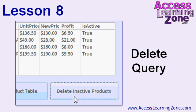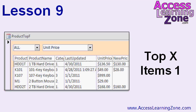In Lesson 8, we'll create a delete query to delete inactive products from our product table. In Lesson 9, we're going to learn about the TOP keyword in SQL, where I can say show me the top 5 records, the top 10 records, the top 50% of records. We'll learn the SQL for it, and we'll start to build a form where the user can pick what they want to see — show me the top 3, what field you want to sort by, and so on.